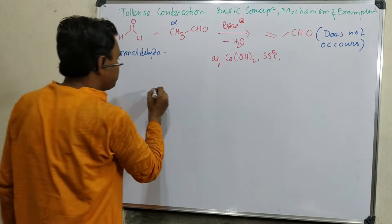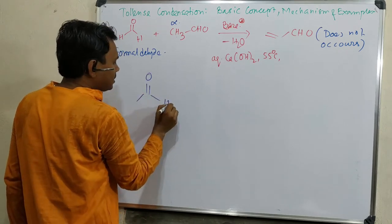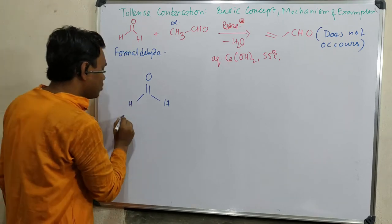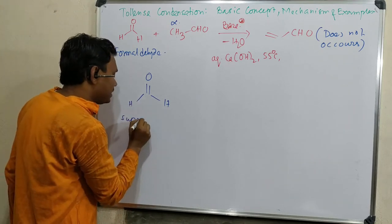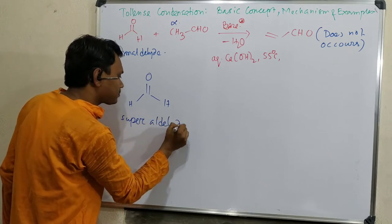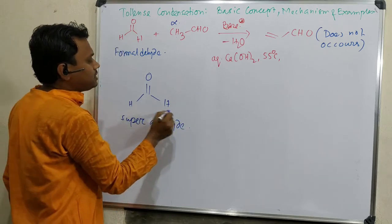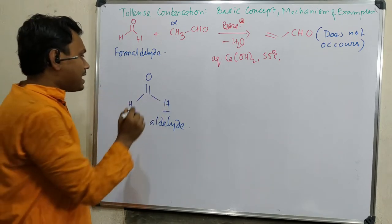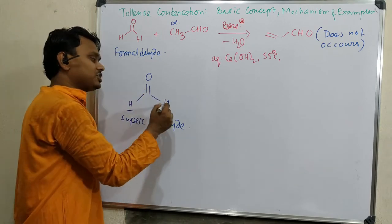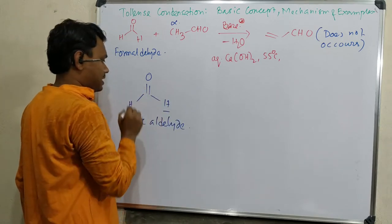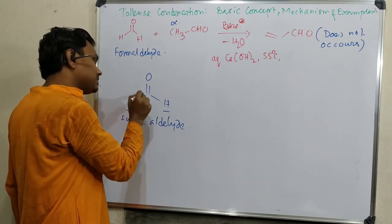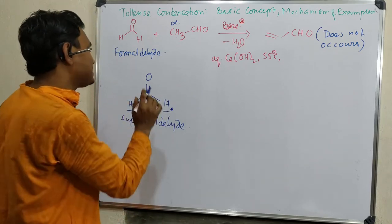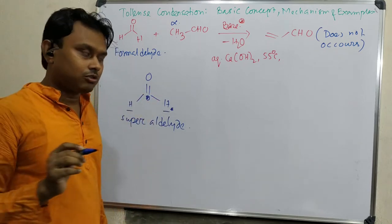Now question why? Because of the extreme reactivity of formaldehyde. If you look at the formaldehyde, this is very electron deficient, extremely. It is something called super aldehyde. Because you can see these are hydrogen, means they are not donating any electron. And second point, they are very small. High positive charge density here and less bulkiness make formaldehyde very electron deficient.